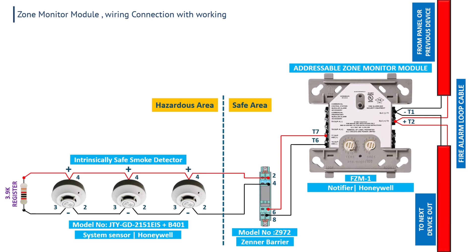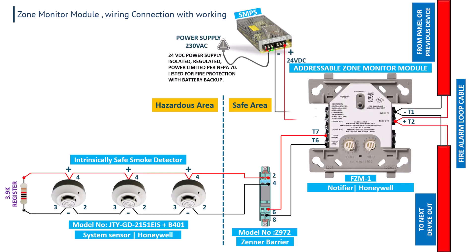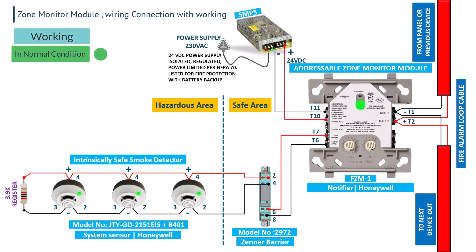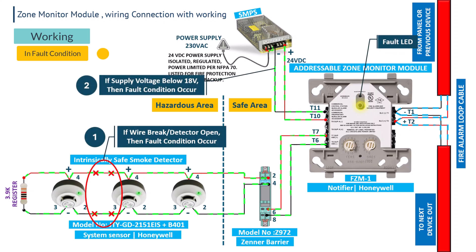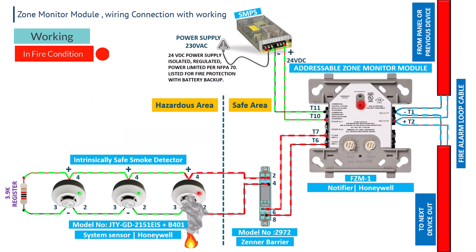The end-of-line resistor is installed in the last detector with a value of 3.9 ohms. A 24V DC power supply with battery backup is connected to the T11 and T10 terminals of the zone monitor module. In normal conditions, the zone monitor module shows a green indication. If there is any fault such as an open or short cable, the zone monitor module shows an orange indication. If a fire event occurs, the detector goes into fire condition, the zone monitor module receives the fire signal and shows a red indication, immediately sending the fire signal to the fire alarm panel, which displays the address of the zone monitor module indicating which zone has the fire.